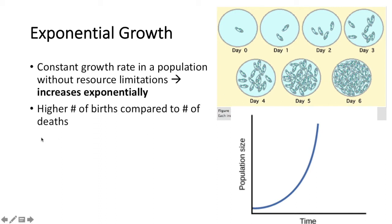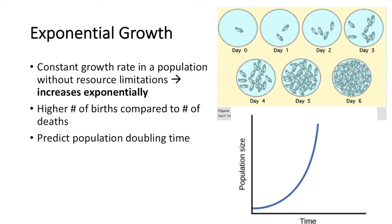Another characteristic of exponential growth is a higher number of births compared to the number of deaths. Also in exponential growth, we can predict a population's doubling time. That's how we were able to predict that 11 billion peak.